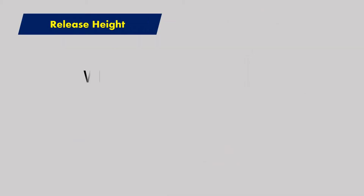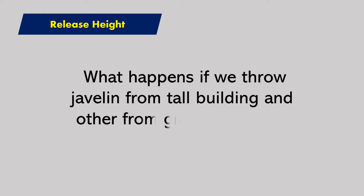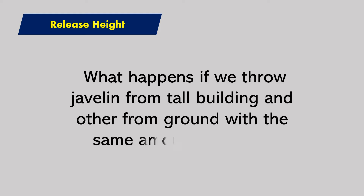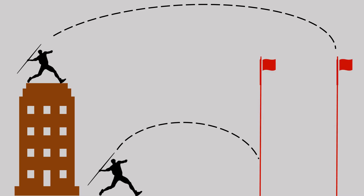What happens if we throw a javelin from a tall building and another from the ground with the same amount of force? The javelin from the tall building is going to cover more distance. Obviously there is not this much difference in competition, but the moral of the story is: the higher the release, the more distance will be covered.